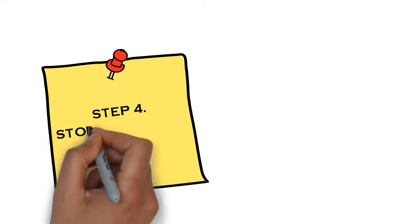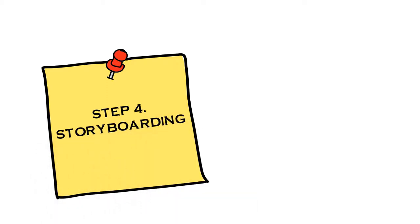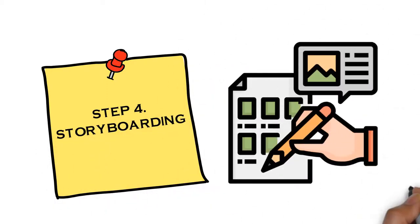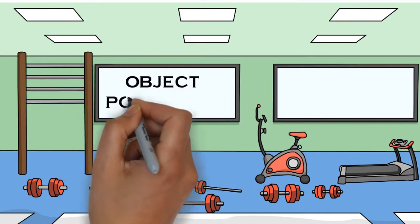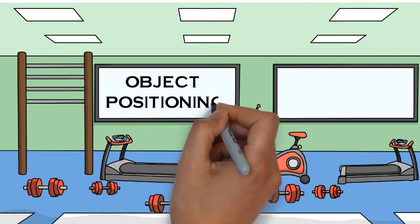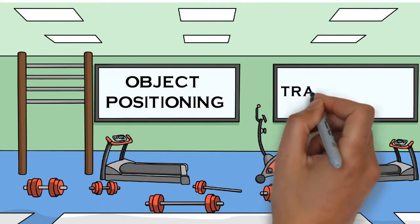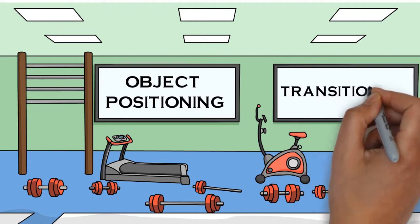The fourth step in this framework is storyboarding. This is where you organize the illustrations or images to use for the project. You set the position of each object on the canvas and also determine the sequence and transitioning between objects.